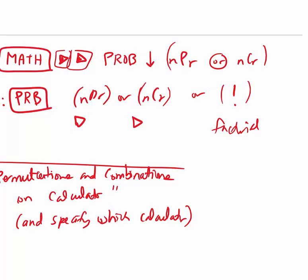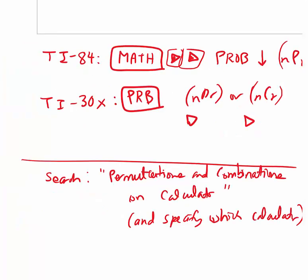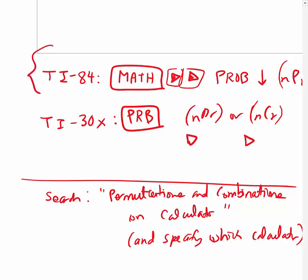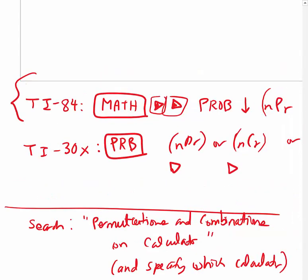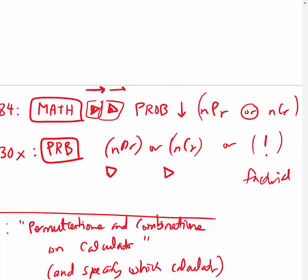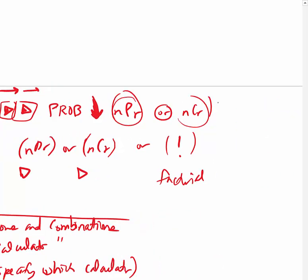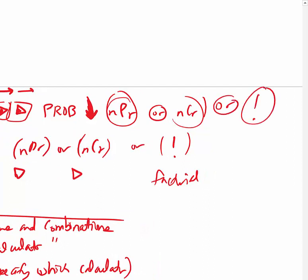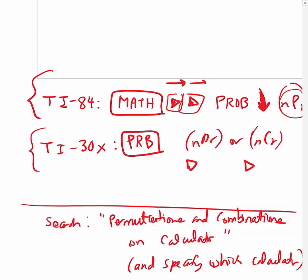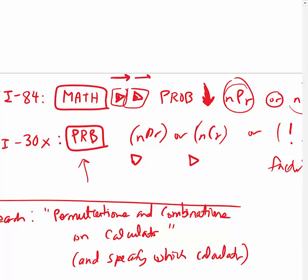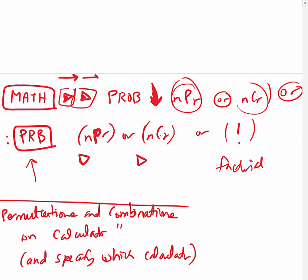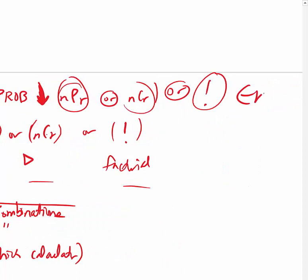For a Texas Instruments TI-80 series calculator (82, 83, 84): press the MATH button, go right to PROB (probability), then scroll down to find NPR for permutations or NCR for combinations, or factorial. For a TI-30 series: there's a PRB button for probability - press it and you'll see NPR, NCR, or factorial. Use your cursor to select and press Enter.